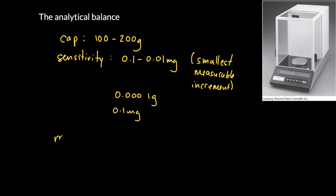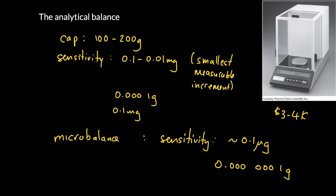You can also use a microbalance. The microbalance is going to be a couple of orders of magnitude more expensive than an analytical balance. So an analytical balance might run you $3,000 to $4,000. A microbalance might start running you $10,000 to $100,000, and its sensitivity is much smaller, somewhere in the order of maybe a tenth of a microgram.